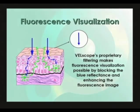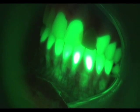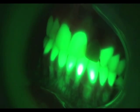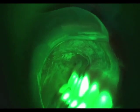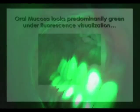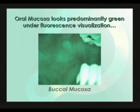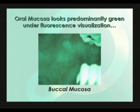Because the fluorophores in the epithelium and stroma fluoresce mainly in the green when illuminated with blue light, oral mucosa looks predominantly green in appearance when viewed through the VELscope handpiece. This picture shows the inside of the cheek. You can also see the teeth — tooth enamel fluoresces more strongly than anything else in the oral cavity.